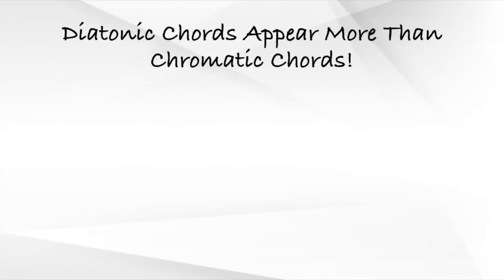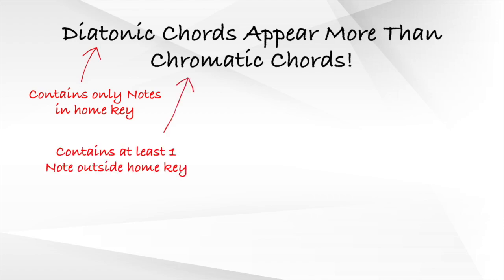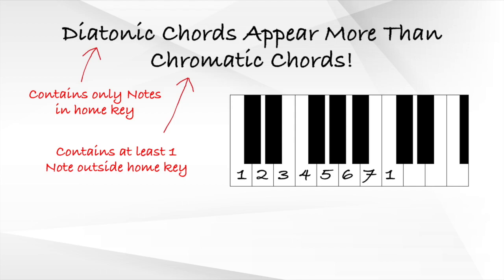The first thing you need to know in order to improve your chances of guessing chords correctly is that diatonic chords appear a lot more than chromatic chords. Simply put, diatonic chords are chords that contain only notes inside our home key, while chromatic chords contain at least one note outside our home key. For instance, if our key is C major, we have seven notes inside our home key: C, D, E, F, G, A, and B.